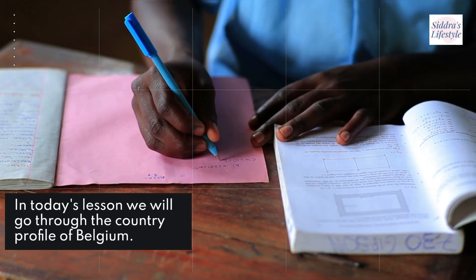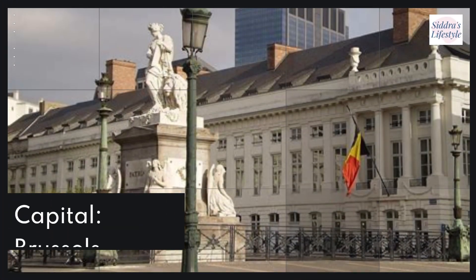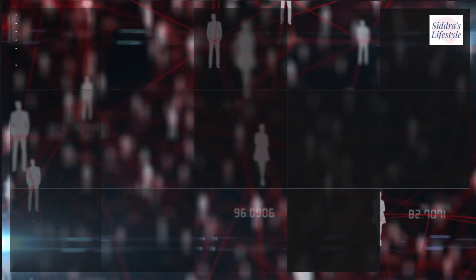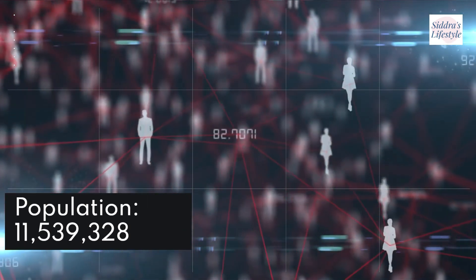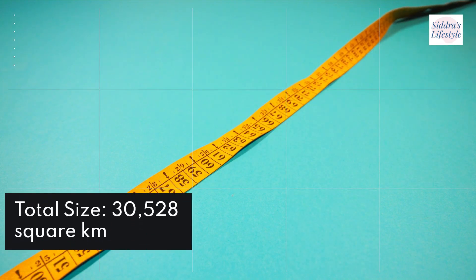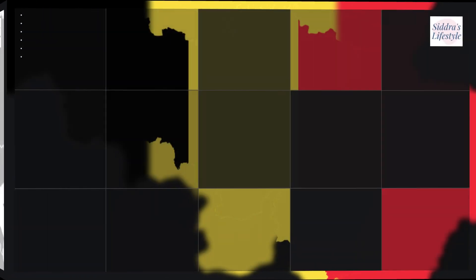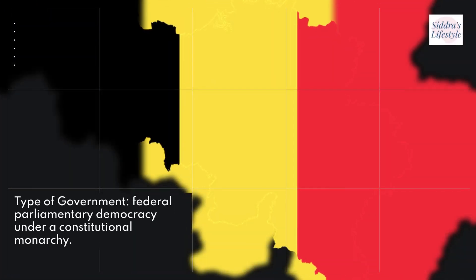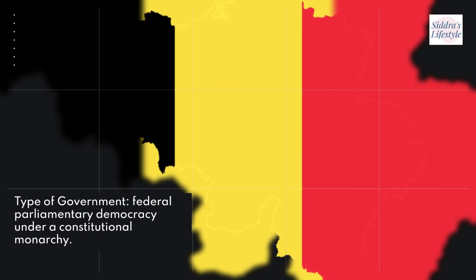In today's lesson we will go through the country profile of Belgium. Capital: Brussels. Population: 11,539,328. Total size: 30,528 square kilometers. World region or continent: Europe. Type of government: federal parliamentary democracy under a constitutional monarchy.